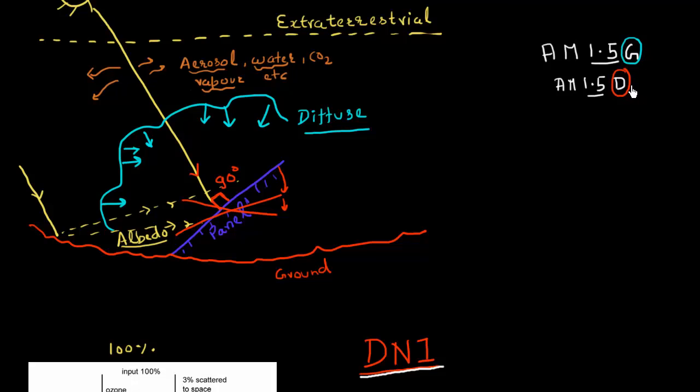So why is this DNI so important for concentrating systems such as CPV or CSP systems? The reason is that when you concentrate the sunlight, when you place a parabolic dish or you place a Fresnel lens and you try to concentrate the sunlight, only this direct component is what you can concentrate.